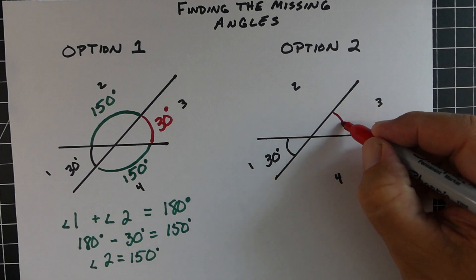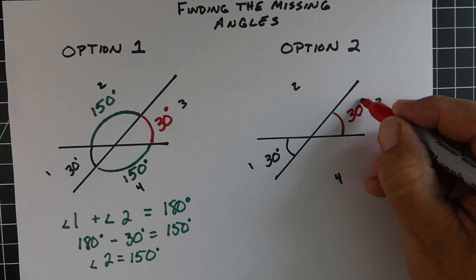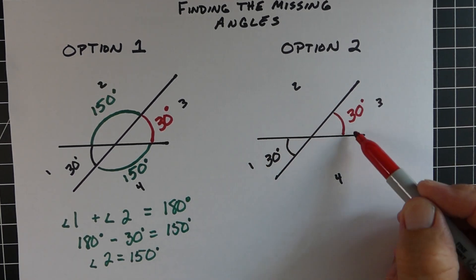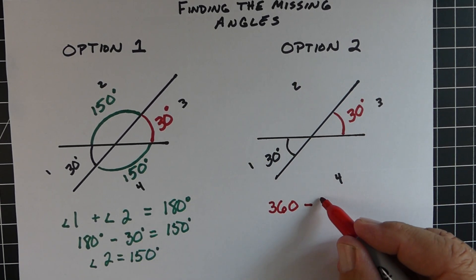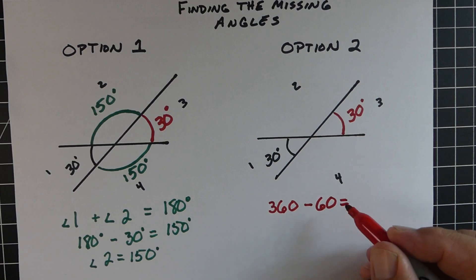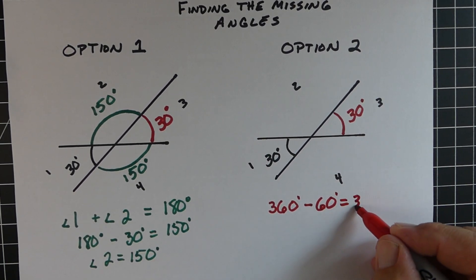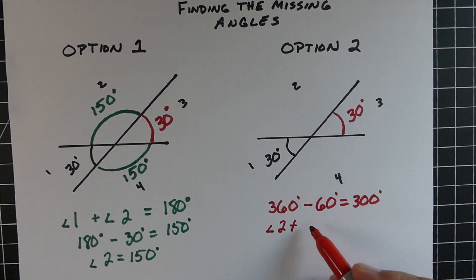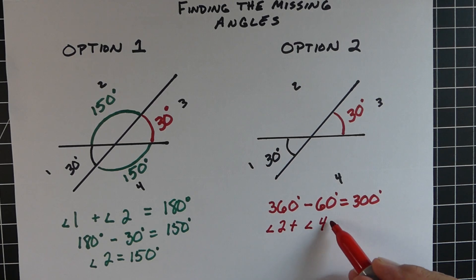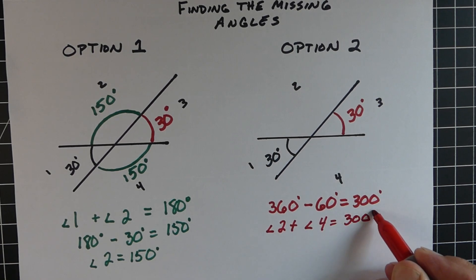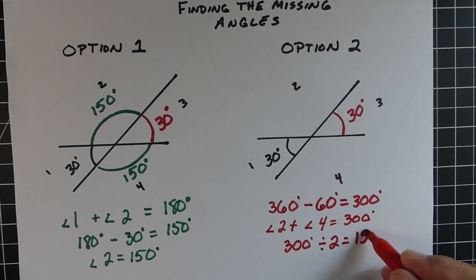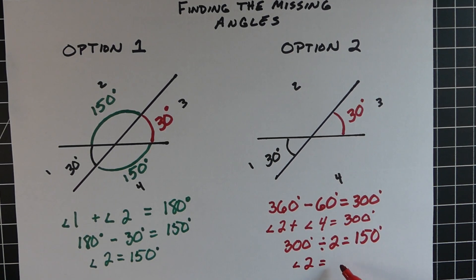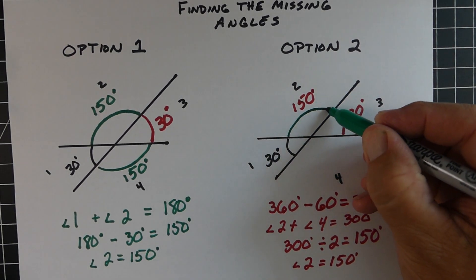This next strategy — option two — we start out kind of the same. Angle three is going to be 30 degrees because those two are vertical. But we also know that all four angles equal 360. So we take 360 minus 60 — we just added the two 30-degree angles — and we get 300 degrees. So angle two and angle four equal 300. Just divide by two and we get 150. So angle two equals 150 and angle four will equal the same thing.